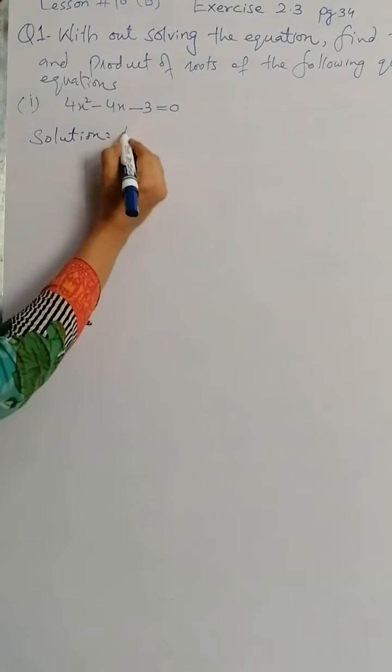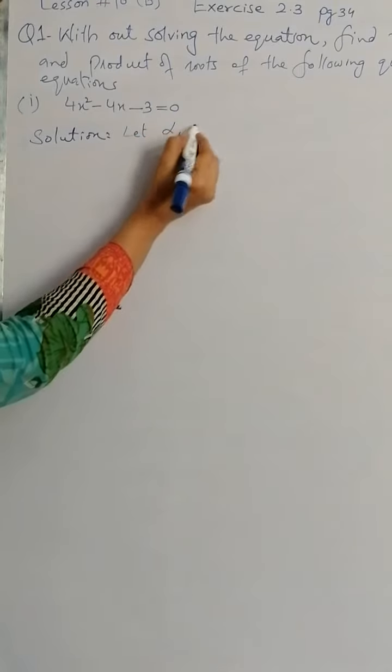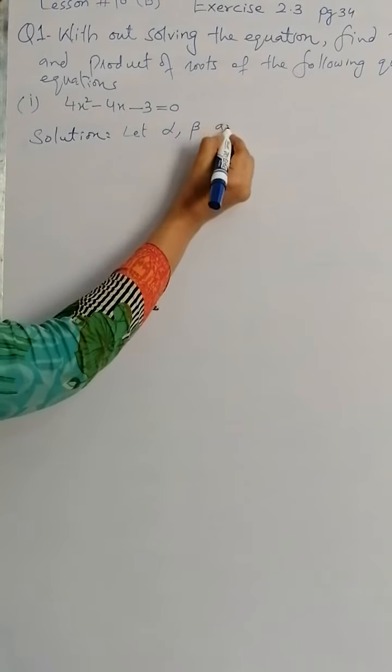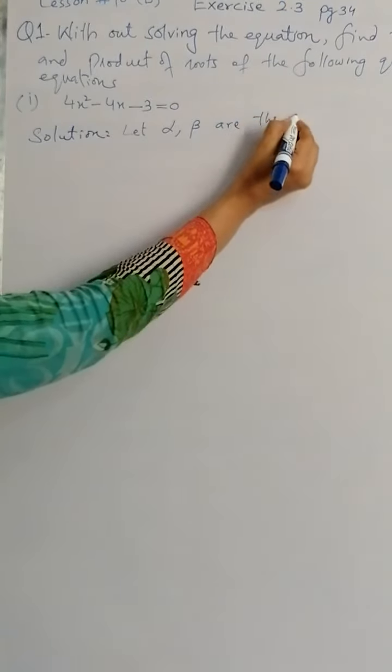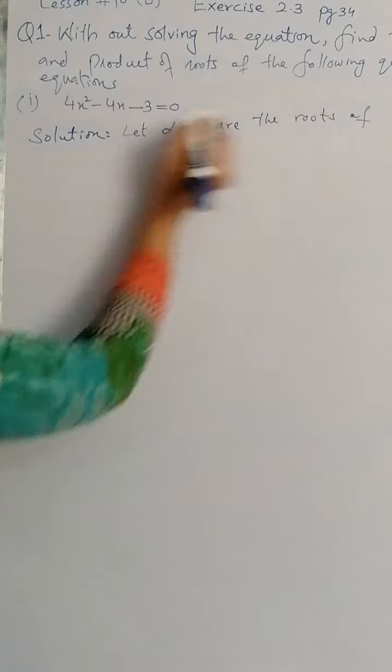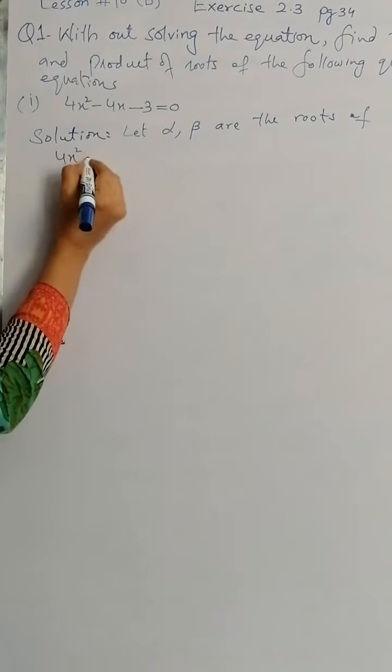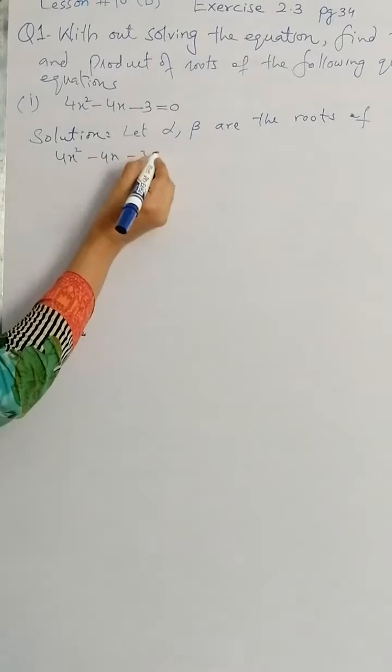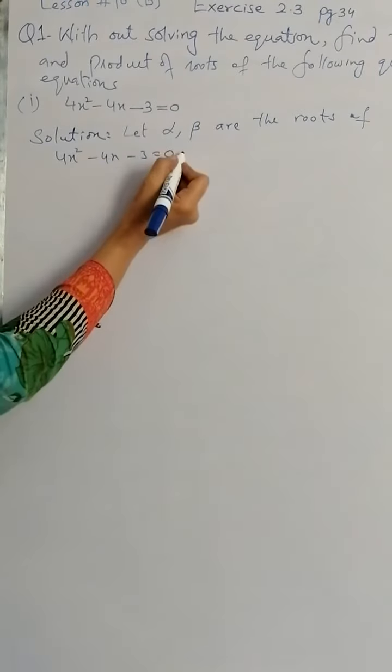So we are starting from let alpha, beta are the roots of 4x² minus 4x minus 3 equals 0 is the equation.